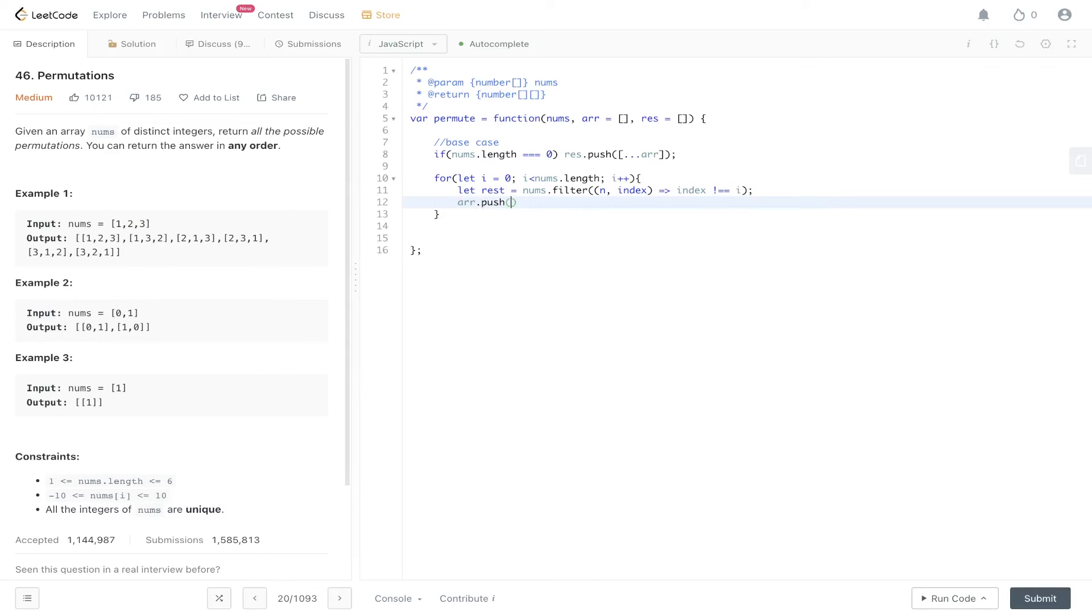So once we've done that, we can push that value into the array like we said we would in the example. And then we need to create the recursive call. So it'll be permute, we pass in rest because we don't want the entirety of the nums array, we just want the fraction of the array that we just calculated, the array and res.